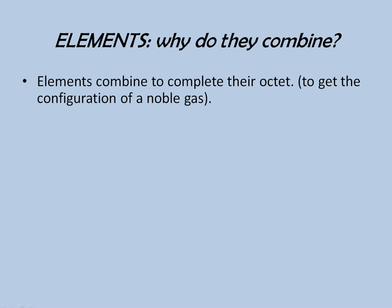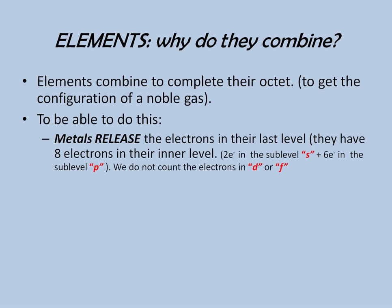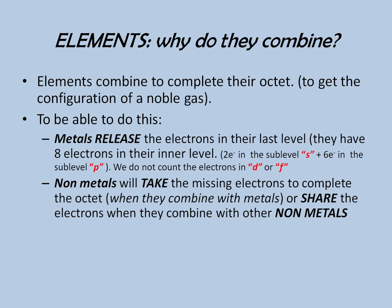How are they going to do this? Metals are going to release electrons in their last level, since they have 8 electrons in the inner level — 2 in sub-level S and 6 in sub-level P. Remember that we don't count the electrons in D or F because they are further inside the atom. They want to release these electrons to get the configuration of the noble gas near to them. In the case of non-metals, they will take the missing electrons to complete the octet when they combine with metals. But when they combine with non-metals, they do not want to give away the electrons, so they are going to share electrons. In this tutorial, we are going to see how metals release and non-metals take electrons, since we are talking about ionic compounds. Covalent compounds are going to be covered in the next tutorial.